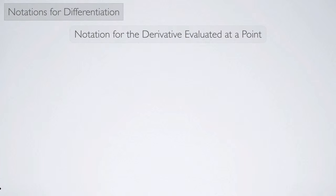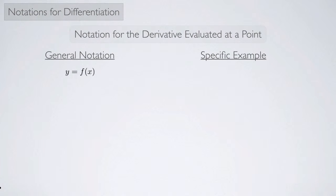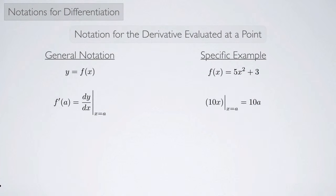Finally, let's look at notation for the derivative evaluated at a point. For y equals f of x equals 5x squared plus 3, we had been writing f prime of a, but we can use Leibniz notation and write dy/dx evaluated at x equals a. Since the derivative is 10x, evaluating 10x at x equals a gives 10a — we're just plugging a in everywhere we see x. You might also see a bracket notation in some textbooks, which behaves very similarly.